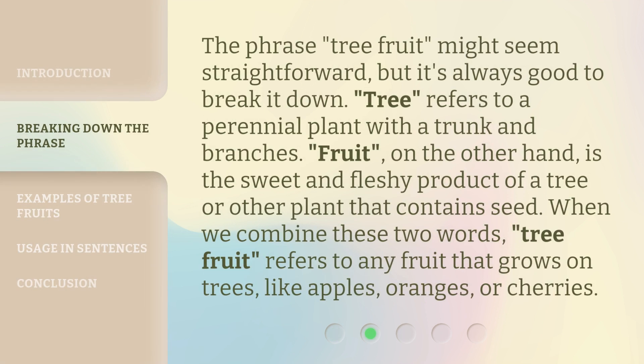The phrase 'tree fruit' might seem straightforward, but it's always good to break it down. 'Tree' refers to a perennial plant with a trunk and branches. 'Fruit,' on the other hand, is the sweet and fleshy product of a tree or other plant that contains seed. When we combine these two words, 'tree fruit' refers to any fruit that grows on trees, like apples, oranges, or cherries.